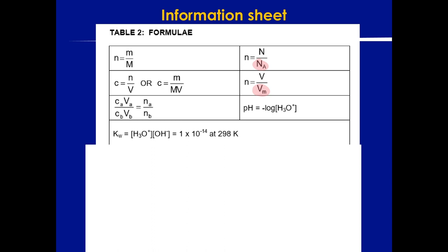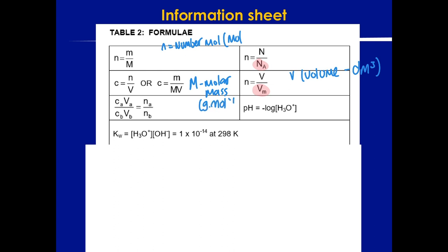Before you study, write out what each symbol means and the unit it's measured in next to your formula sheet. When you look at your formula sheet in the exam, you'll see the notes you made while studying, and you will remember — without even trying — the units and what the symbols mean. This will help you when doing stoichiometry.